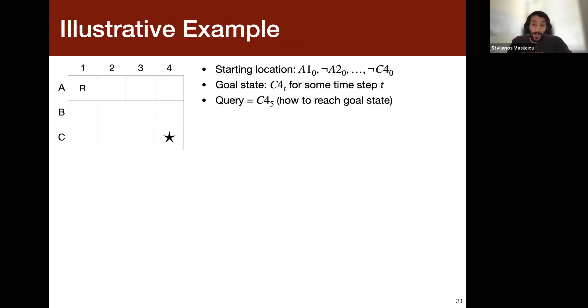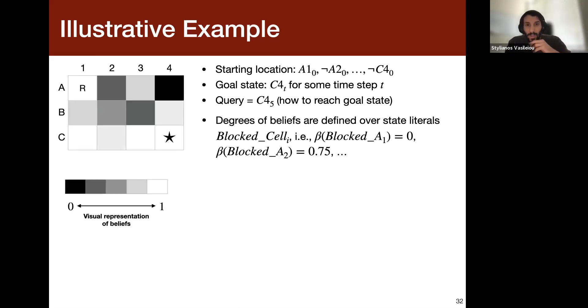So now I'm going to try to illustrate this with a very simple example. So now imagine we have again a simple grid here, and we have the same starting locations, and now the goal state is to go to C4 at some time. And the query is that we want to go to, basically, how to reach the goal state. Now, let's say that we have some degrees of belief defined over the state literals, blocked cells. And now here you can see in the visual representation, basically, the white cells say that the cells are not blocked. So we truly believe that. And the black cells say that we truly believe that they're blocked. And then the gray values in between. So let's say we have now these degrees of belief.